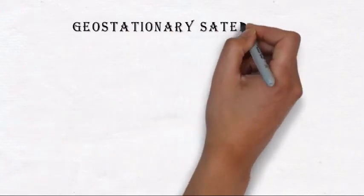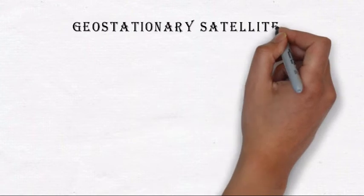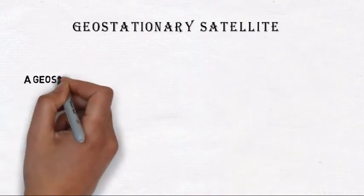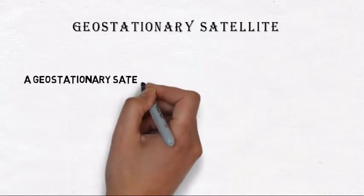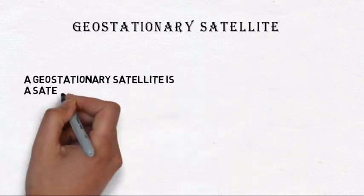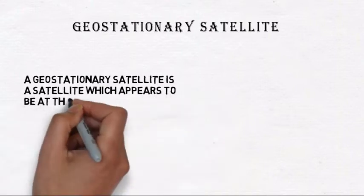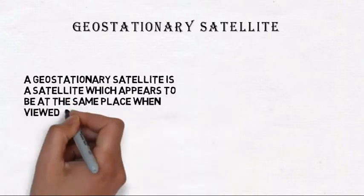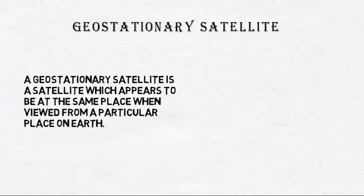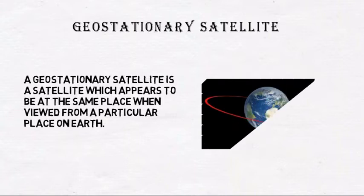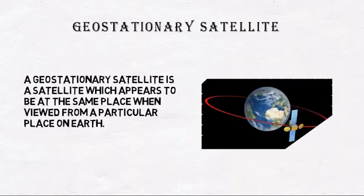Geostationary satellites: A geostationary satellite is a satellite which appears to be at the same place when viewed from a particular place on earth.